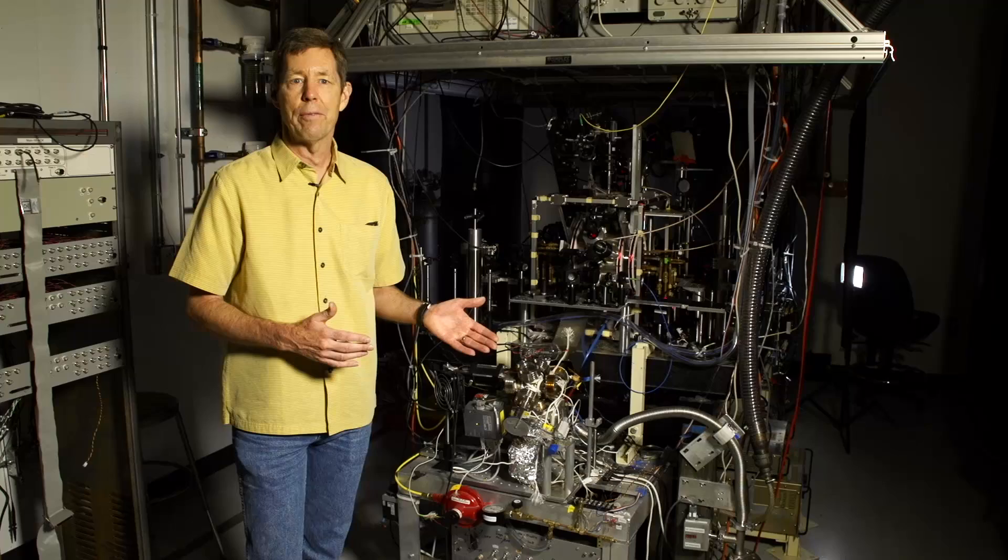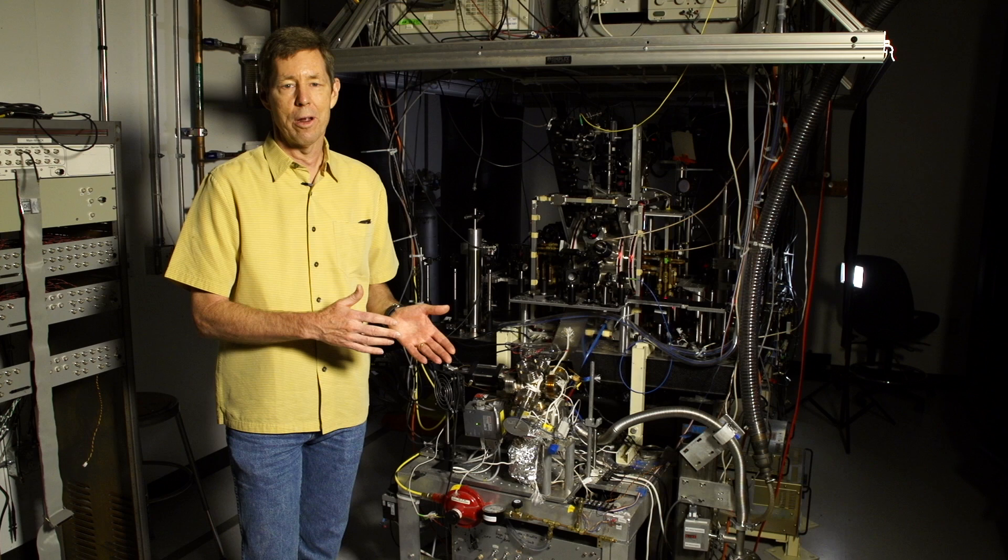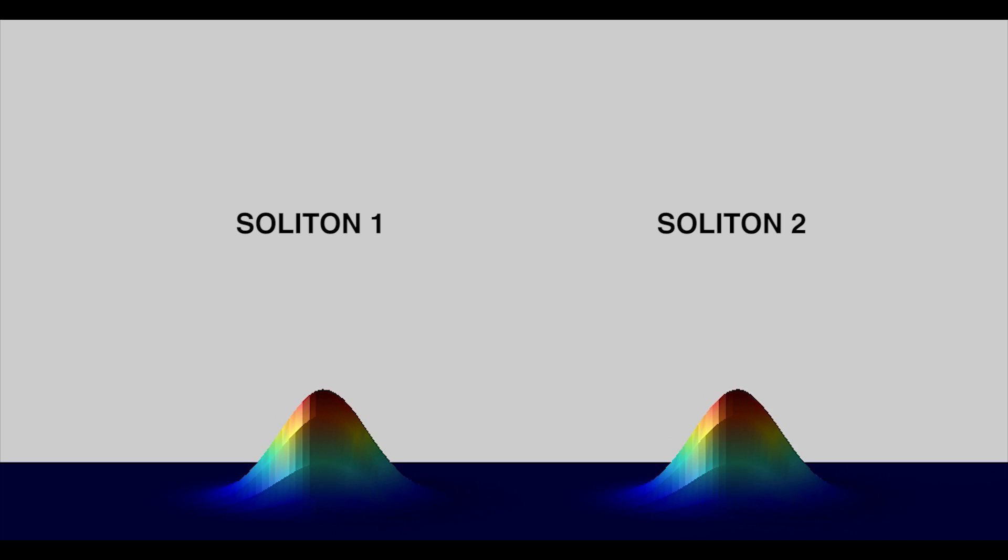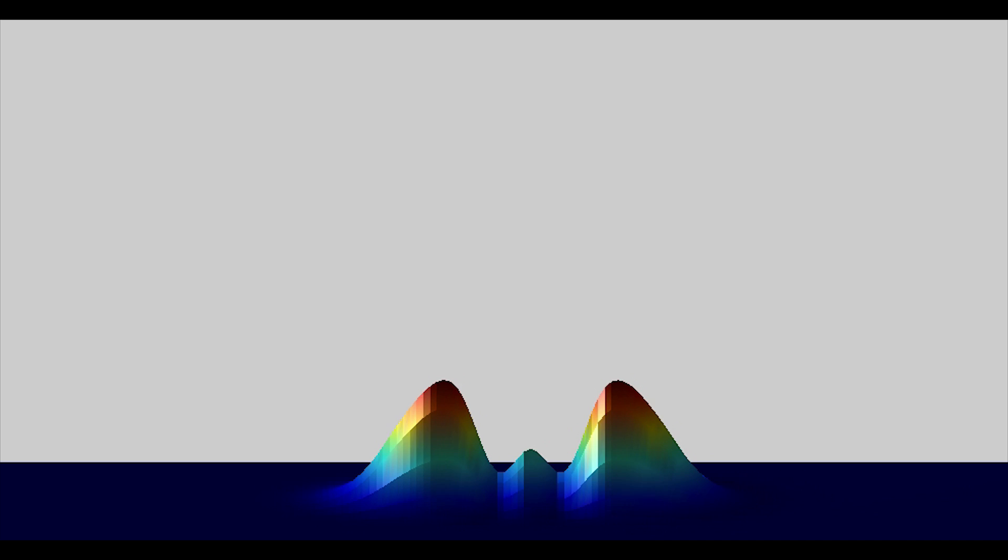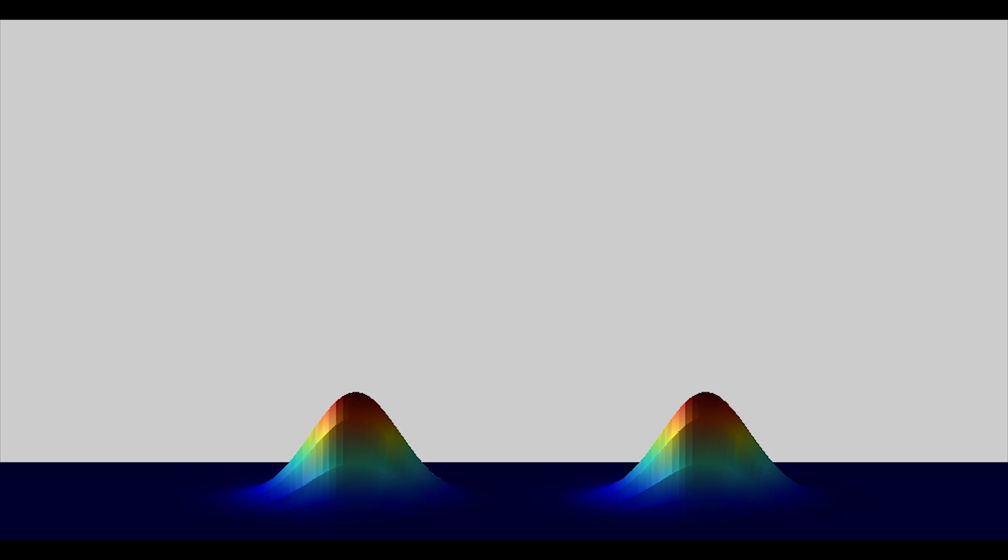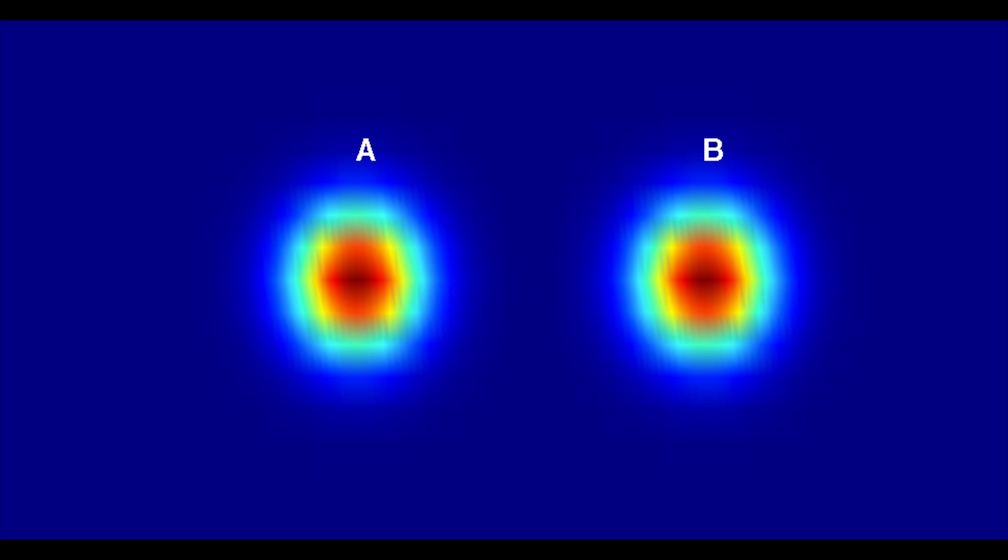What we're studying here in particular in this experiment is something called a matter-wave soliton. Atoms can behave as particles and they can behave as waves. One of the most interesting wave phenomena is something called a soliton, which is a wave packet, a group of waves together that can propagate without changing shape, without changing velocity, without spreading.